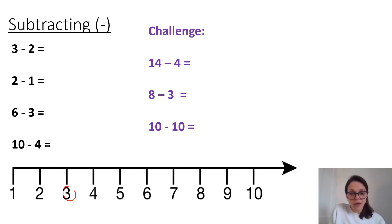I'm going to start on three and I'm going to do two jumps. One, two. What number have I landed on? It is one. Three, take away two, is one.